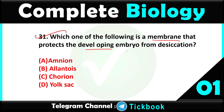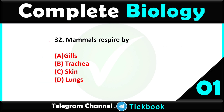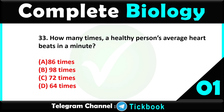Question thirty-one: which one of the following is a membrane that protects the developing embryo from desiccation — option number A, amnion, is the right answer. Question thirty-two: mammals respire by — option number D, lungs.